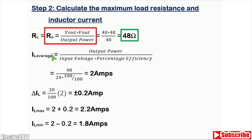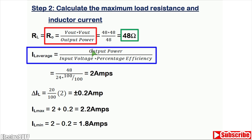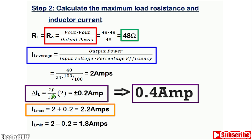The average inductor current is given by the output power divided by the input voltage times the percentage efficiency. So that is 48 watts divided by 24 volts multiplied by 100 over 100%, giving an average inductor current of 2 amperes. The change in inductor current is 20% of 2 amperes, which is plus or minus 0.2 amperes. This is crucial for determining the current sensing resistance to protect the circuit from overcurrent.